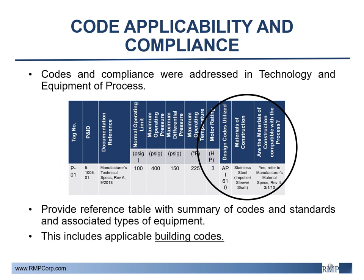The last section, code applicability and compliance, was addressed in the process equipment and instrumentation specifications tables. The applicable codes and specifications were defined and evaluation of compliance and compatibility of the process were confirmed. However, a reference table with a summary of codes and standards used for design, installation, and operation would provide organization to the numerous codes that can be applicable to a process. This should also include applicable building codes where the process is located.